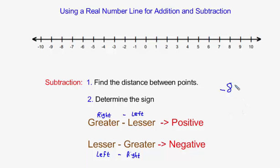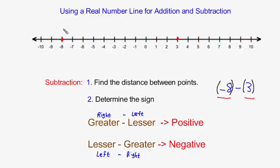Another problem was to take negative 8 and subtract 3. You may have seen parentheses around negative 8; if you wanted to, you could put parentheses around the 3 as well, just to show this is my first number, this is my second number, and we are subtracting. Because I'm subtracting, I plot the points: negative 8 is here, positive 3 is here. Negative 8 is 8 units from 0, and then 3 more to reach positive 3, so they are 11 units apart.